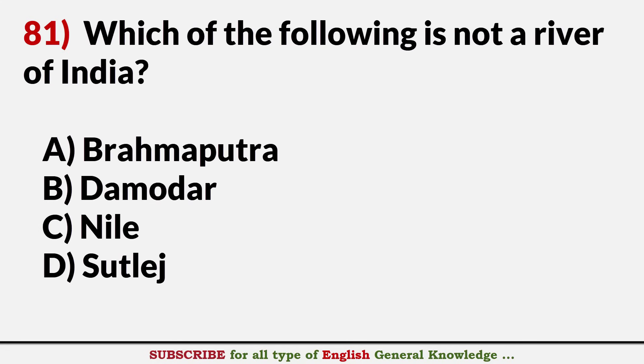Which of the following is not a river of India? Answer C. Nile.